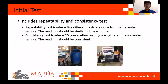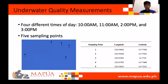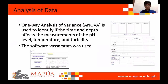Initial testing includes repeatability and consistency tests. The repeatability test involves five different trials in the same water, where the data should have similar results. The consistency test involves the sensor measuring continuously, with data that should also have similar results. For the actual underwater quality measurement, four times of day are selected, and there are five sampling points plotted on a figure with their coordinates. One-way analysis of variance is used to identify if the time and depth affect measurements of pH level, temperature, and turbidity. The software VassarStats was used.